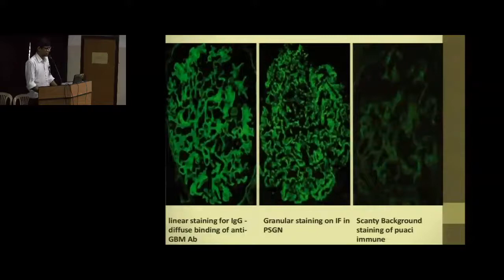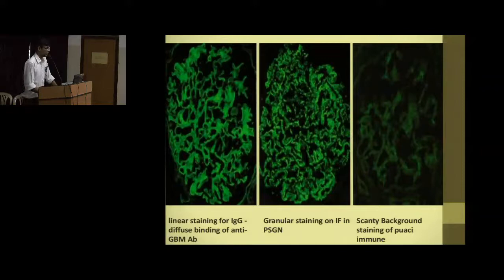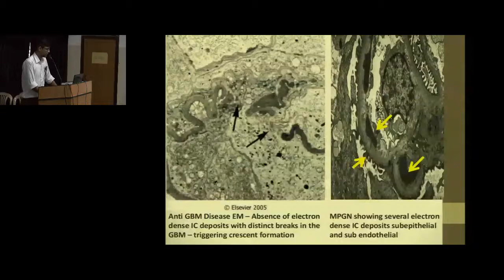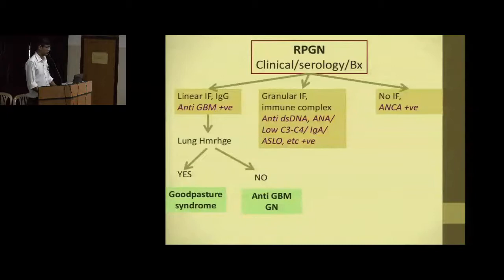The first immunofluorescence pattern is anti-GBM disease with linear deposition. The second shows granular appearance — some areas well lit, some not. The third shows hardly any fluorescence. There is absence of dense immune complex deposits in Type 1 and Type 3 RPGN, while Type 2 shows abundant deposits. On electron microscopy, the first picture shows basement membrane breakdown; the second shows sub-epithelial and sub-endothelial deposits, as seen in immune complex-mediated glomerulonephritis.